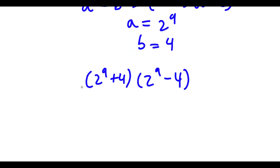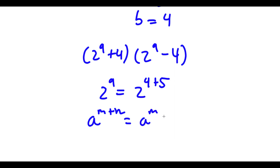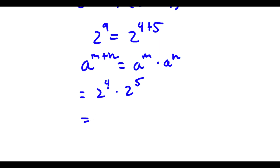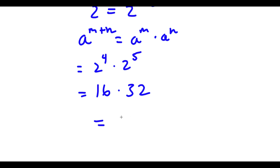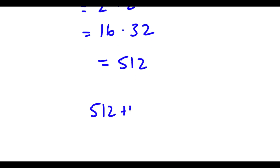Now, let's solve for 2 to the power of 9. 2 to the power of 9 is the same thing as 2 to the power of 4 plus 5. Applying the rule, that's 2 to the power of 4 times 2 to the power of 5. 2 to the power of 4 is 16 and 2 to the power of 5 is 32, so 16 times 32 equals 512. So now I have 512 plus 4 times 512 minus 4.